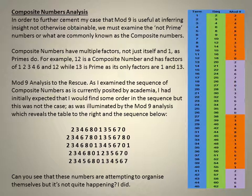As I examined the sequence of composite numbers, as is currently posited by academia, I had initially expected that I would find order in the sequence, but this was not the case, as was illuminated by the mod nine analysis, which reveals the table to the right and the sequence. Can you see that these numbers are attempting to organise themselves, but it's not quite happening?